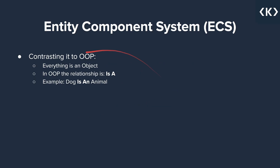We're going to contrast the Entity Component System with OOP — object-oriented programming — where basically everything was an object. In object-oriented programming, the relationship between objects is that something is something. For example, a dog is an animal, or in a Minecraft example, a creeper is an entity. It is always an is-a relationship, where you always extend certain classes and implement certain interfaces.